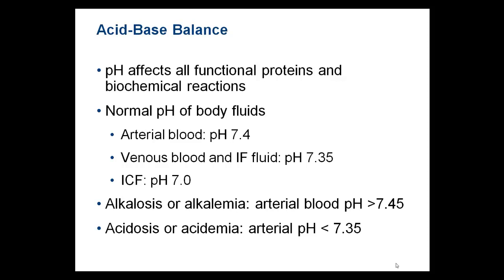The normal pH of body fluid is approximately 7.4. The arterial blood is 7.4; the venous blood drops a little because of carbon dioxide, going to 7.35; and the intracellular fluid is around 7. You can dip into alkalosis if your blood rises above 7.45, and into acidosis if it drops below 7.35. That narrow range — 7.35 to 7.45 — is the normal range.